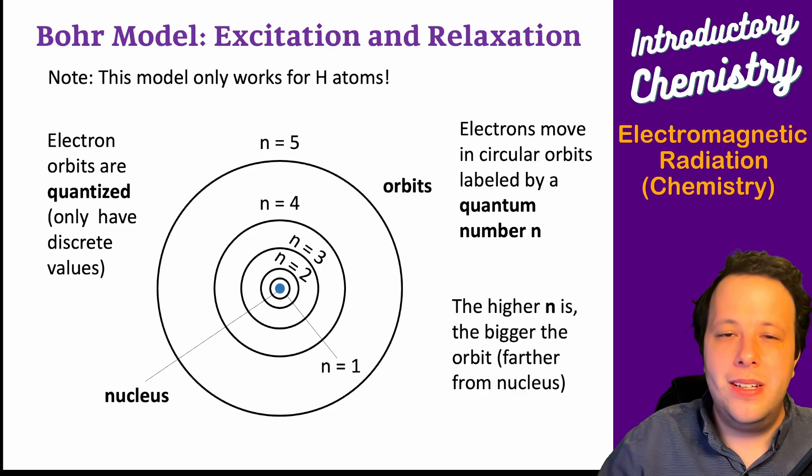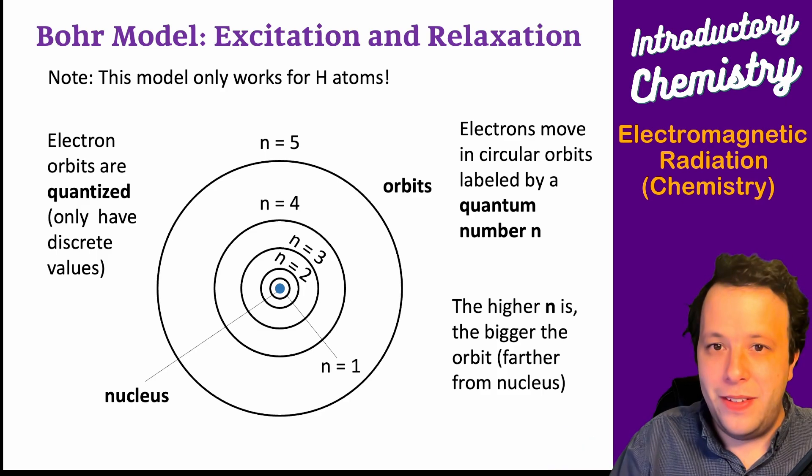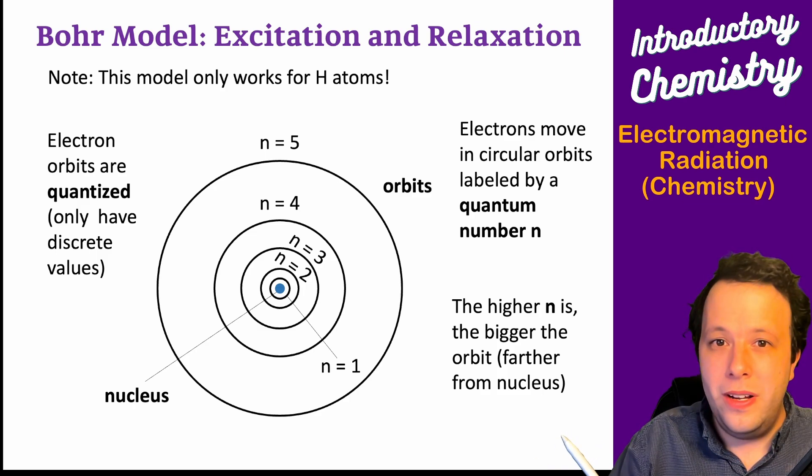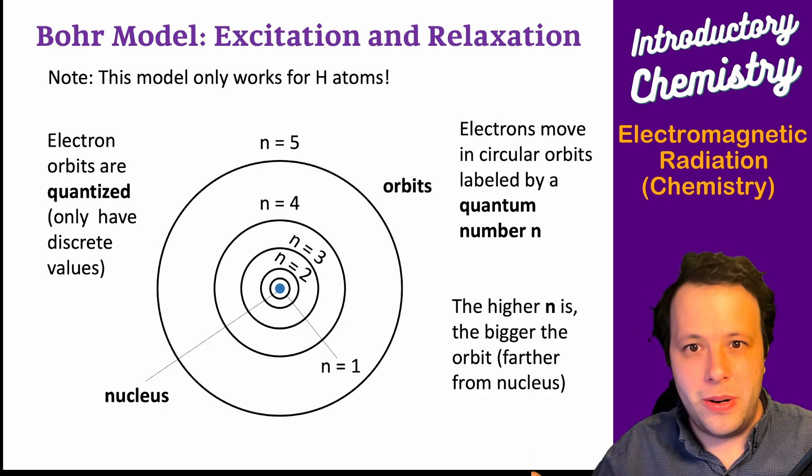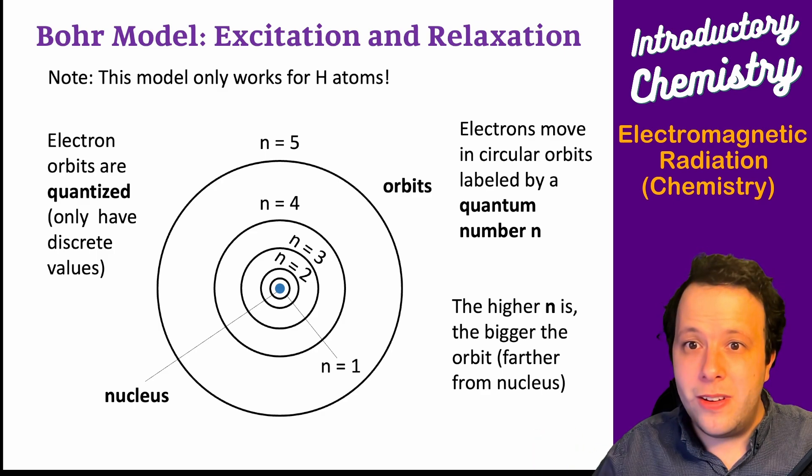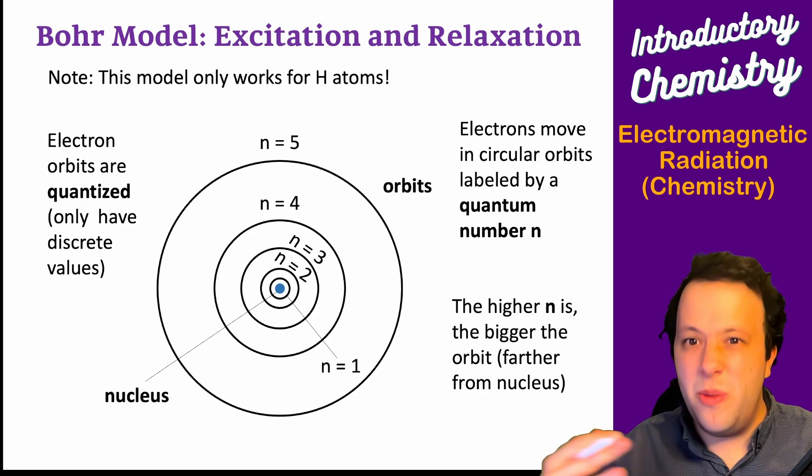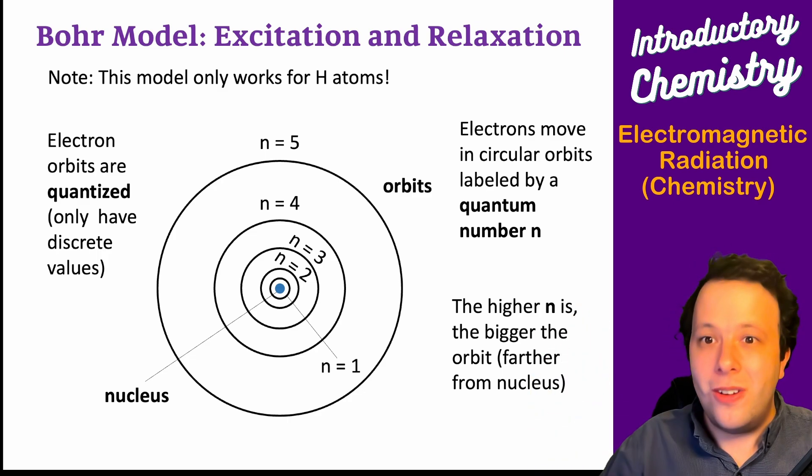With the n value, the higher it is, like n equals 1 versus n equals 5, the bigger the number, the more energy it has and the farther it is from the nucleus. If you start at the first floor and go to the fifth floor, it's going to take a longer time and more work to get there.